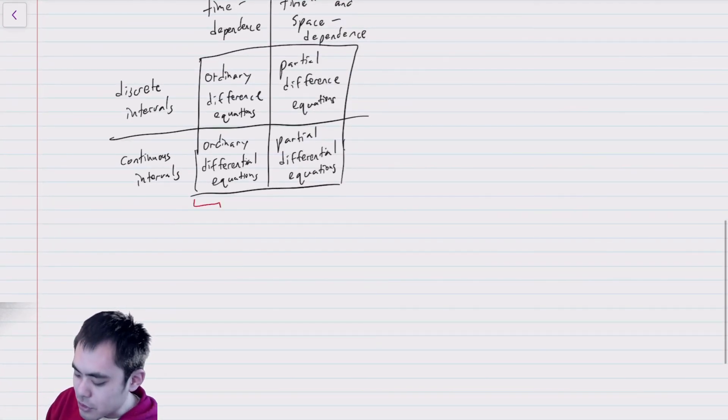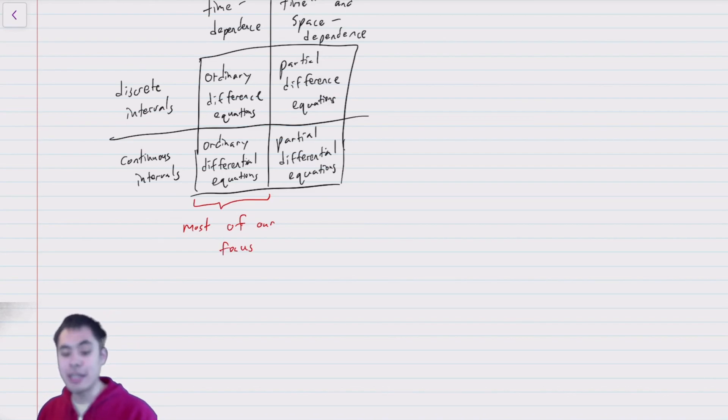Now, in our class, most of our focus is going to be here. Simply because this is an introduction to mathematical biology, not an advanced course in mathematical biology. We'll mention some of the other types of models, but for the purposes of this course, we're going to be focusing primarily on ordinary difference and ordinary differential equations. In fact, the first half of the course will be on ordinary difference equations, and the second half will largely be focused on ordinary differential equations. So having said that, let's go ahead and get started with the material in the next lecture.